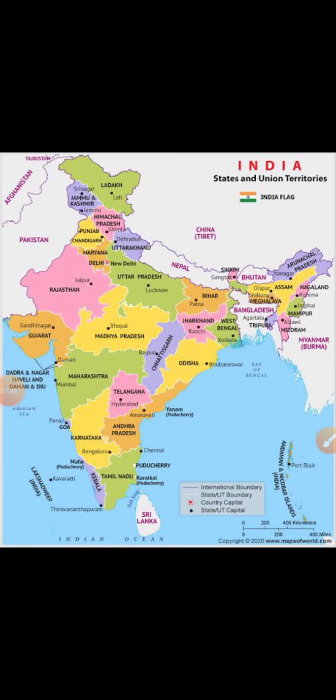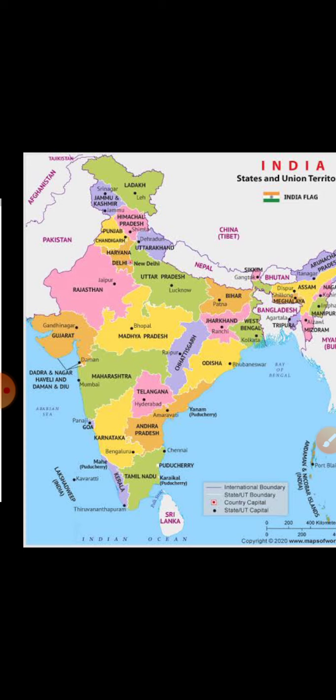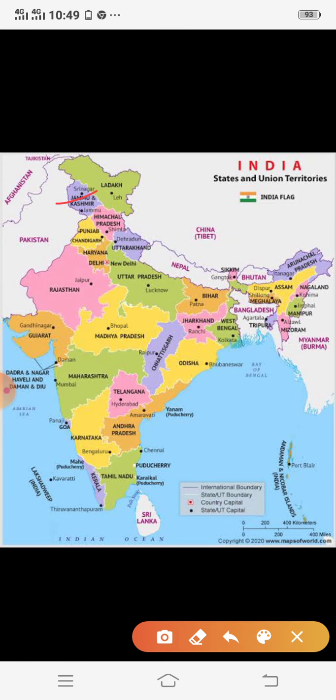Now let us see the spatial distribution of religions with the help of a map. Hinduism is practiced in almost all parts of India except a few states. Jammu and Kashmir, some parts of Kerala, Lakshadweep, and some northeastern parts of India are exceptions. Besides these, the majority of the population follows Hinduism.